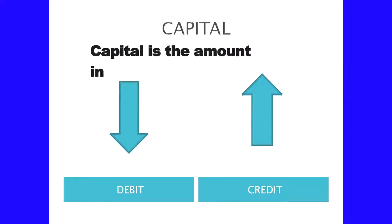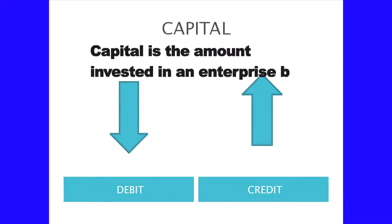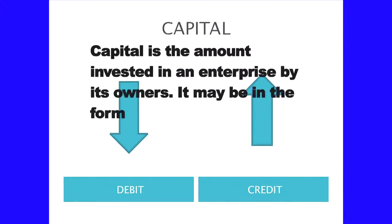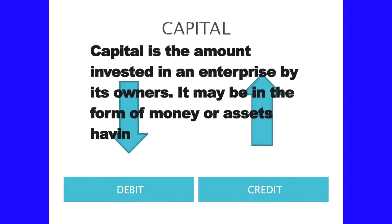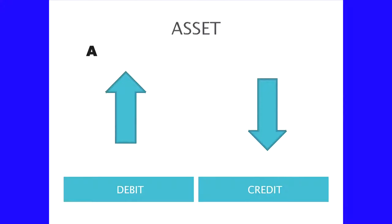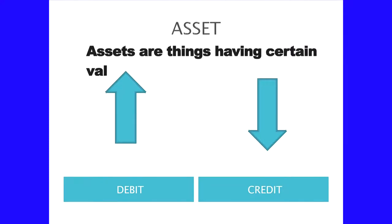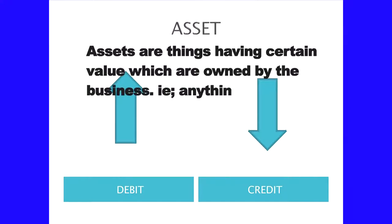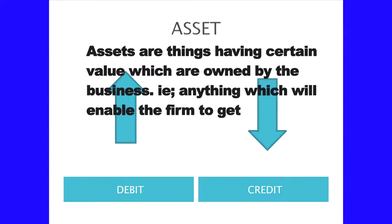What is capital? The amount invested in the business by the owner can be called as capital. It may be in the form of money or assets having value. Now let us study what are assets. Assets are things having certain value which are owned by the business — anything which will enable the firm to get cash in the future.